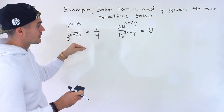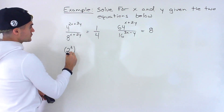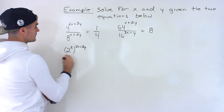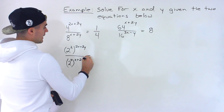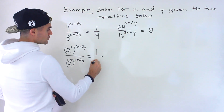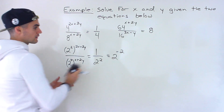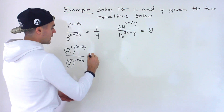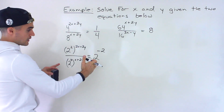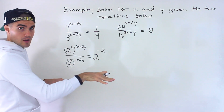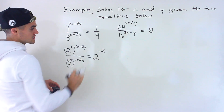Notice that all of these we can rewrite as a base of 2. So this 4 we can rewrite as 2 to the power of 2, and then we'd have the (2x + 3y) on the outside. This 8 we can rewrite as 2 to the power of 3, and we'll have the (x + 2y). Then the 1/4 we can rewrite as 1 over 2 squared, which is the same as 2 to the power of negative 2. We're going to get the whole left side to be 2 to the power of a big exponent, then bring that 2 squared up to the numerator and change the exponent to a negative.